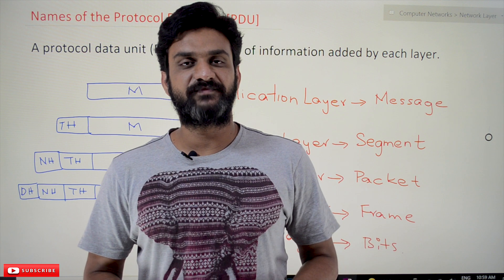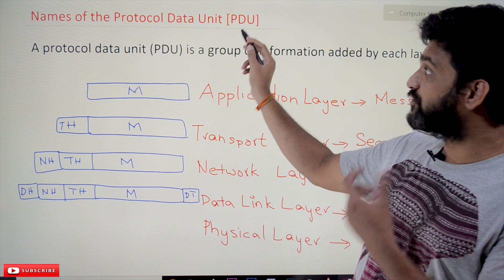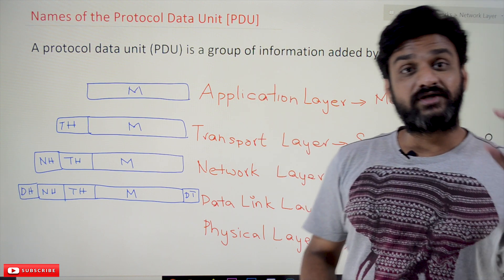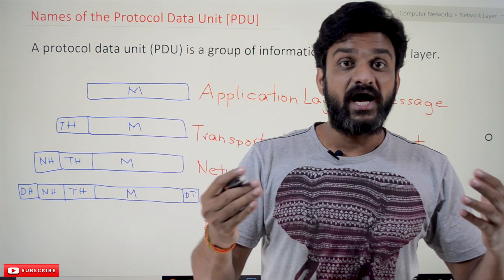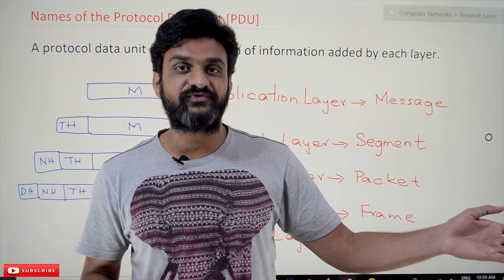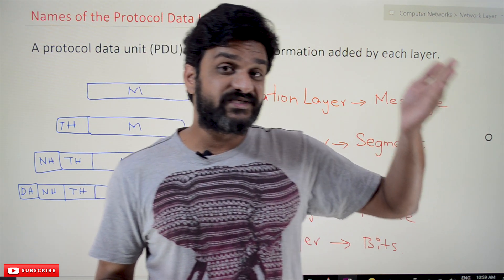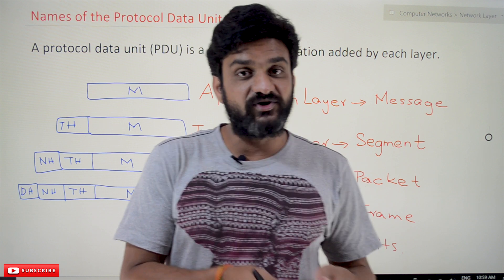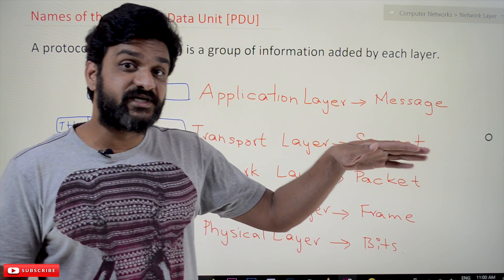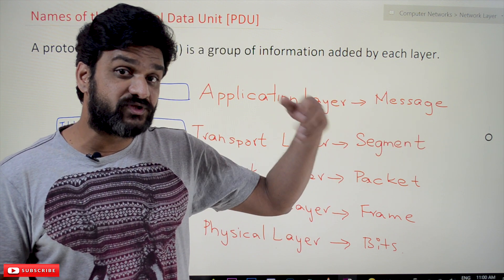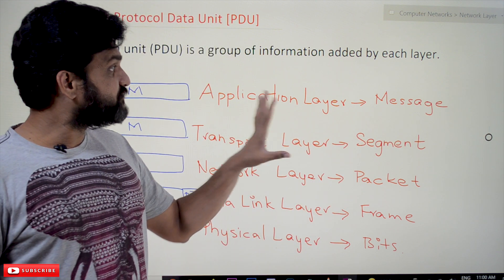Hi, welcome to Learning Monkey. I am Vikram. In this class we will try to understand names of the Protocol Data Unit, which is in short called PDU, the concepts of IP address. The first row fields of the IPv4 header have already been discussed in our previous video. Please watch that video before coming here. In this video we will discuss the details of the fields in the second row of the IP header.